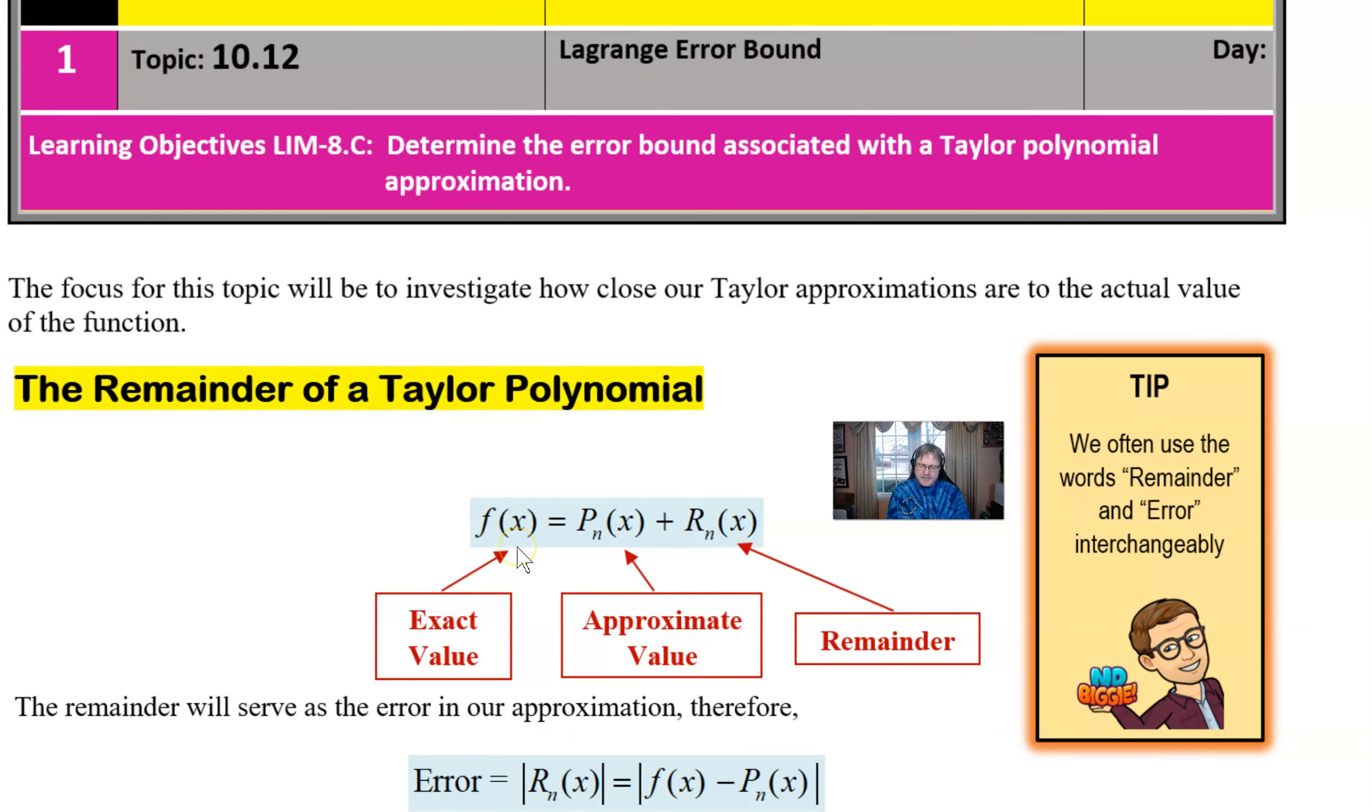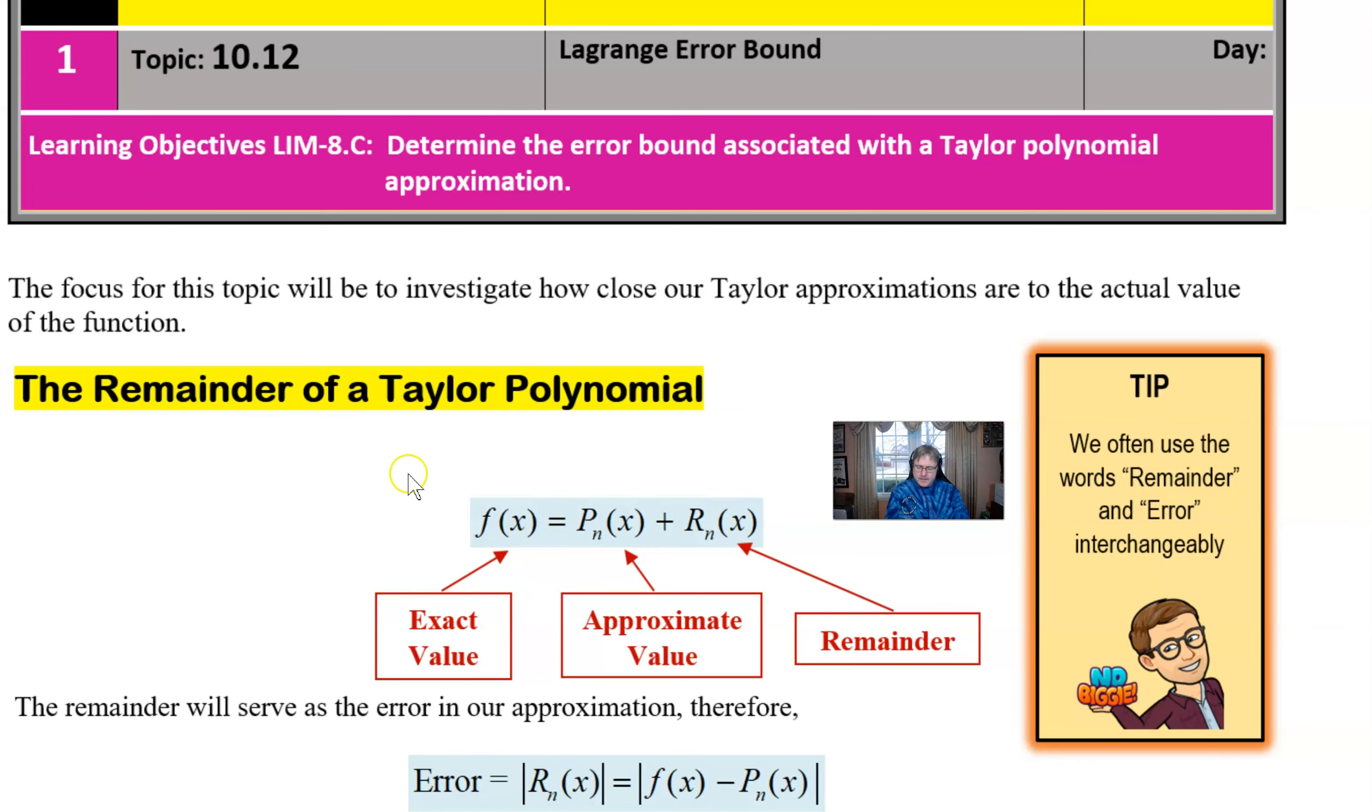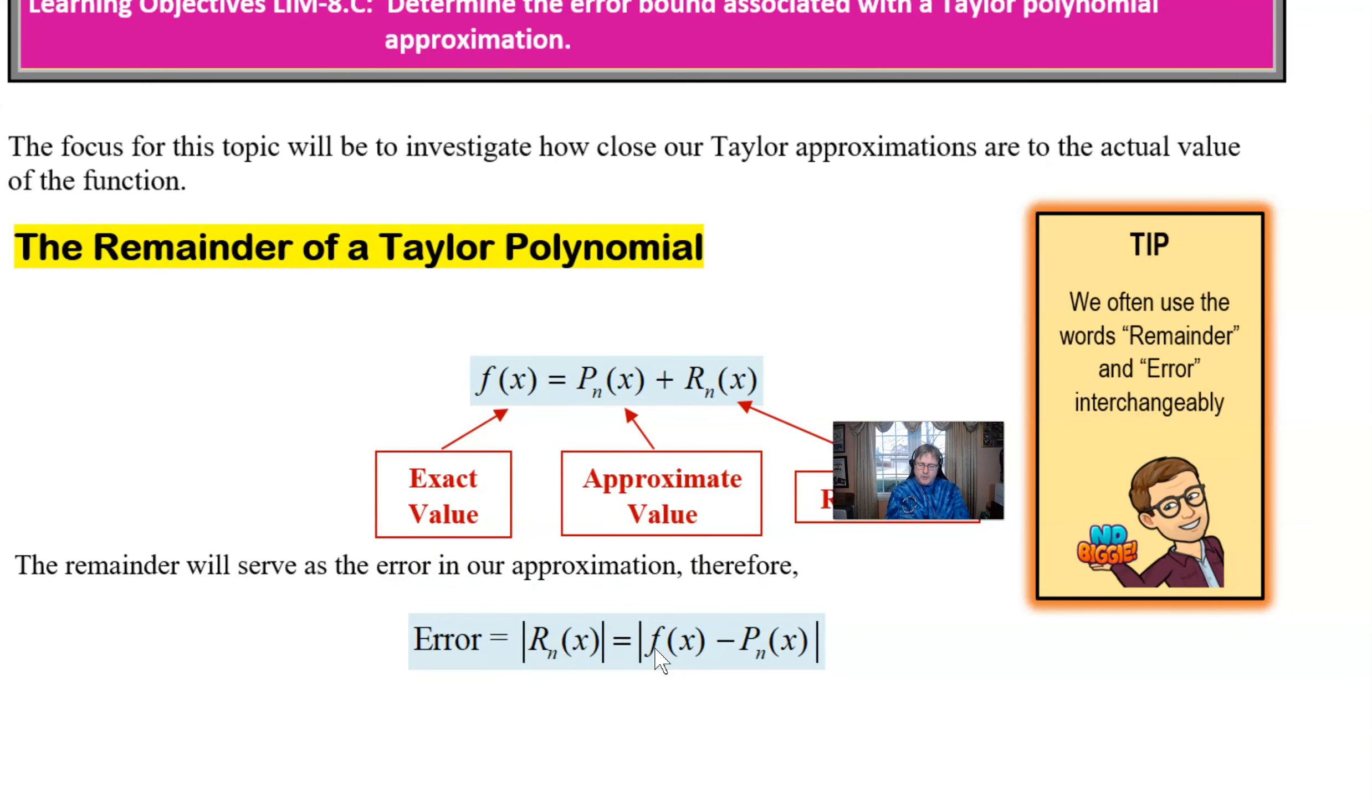And it all starts here with this idea of the f(x) being the exact value of your function. Let's say it's the sine of an x value like 0.2. Well, that can be approximated by the Taylor polynomial or Maclaurin polynomial of whatever degree you want, second, third, fourth. But we're always going to fall a little short because we have to add some kind of leftover because we know that the polynomial is only ever going to be an approximation. And so it's this remainder, it's this r sub n of x that seems to be intriguing us. And I want you to realize that as we move through this particular lesson, the word remainder and the word error are going to be used interchangeably. They're essentially the same thing. And so the remainder will serve as that error. And that error is really nothing more than just what we get when we take the actual value of the function minus the approximated value.